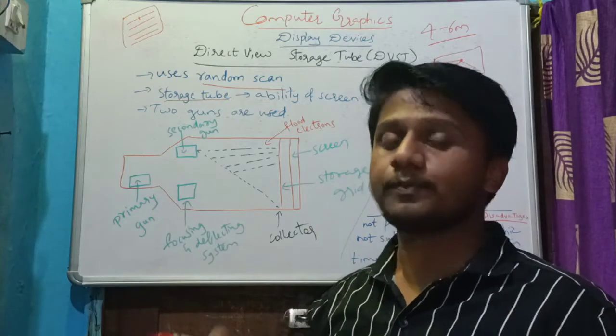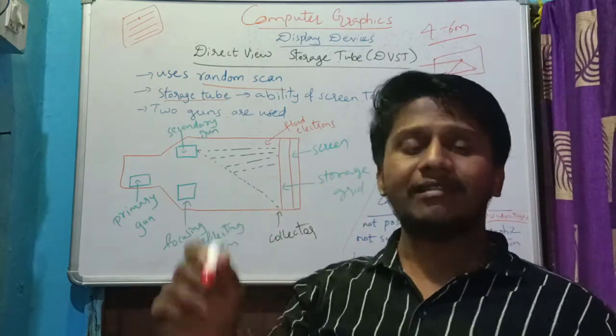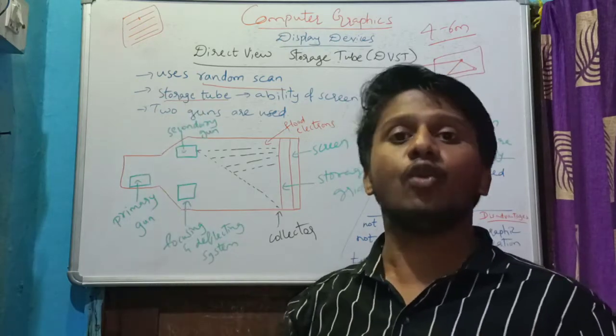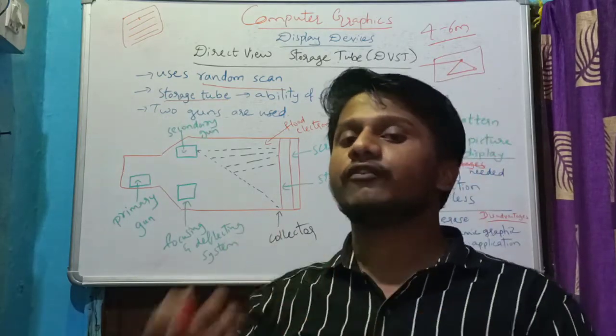Whereas in case of DVST, once the image is produced, that will be stored somewhere called the collector, so that there will be no refresh needed.